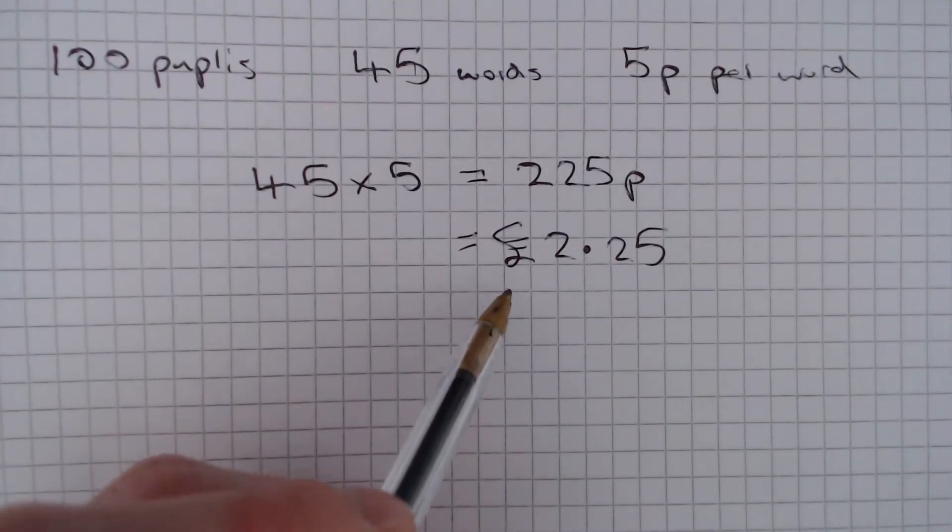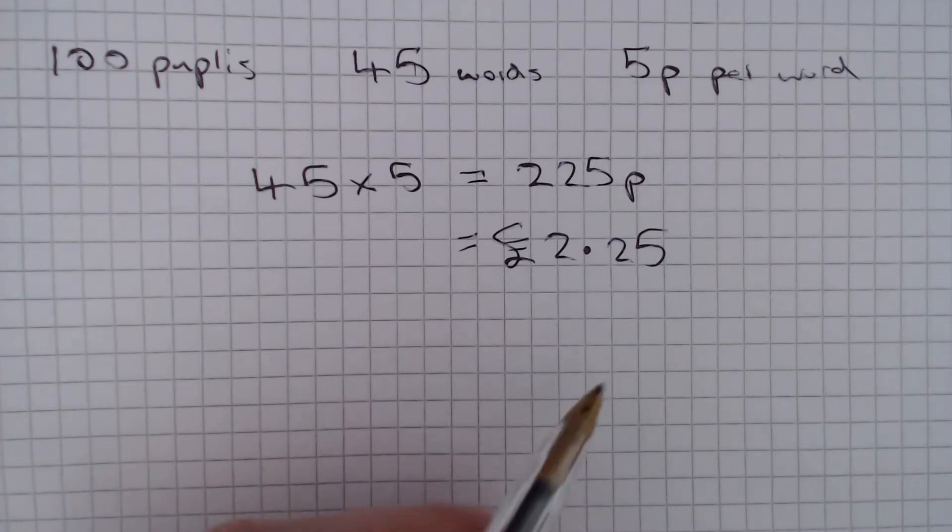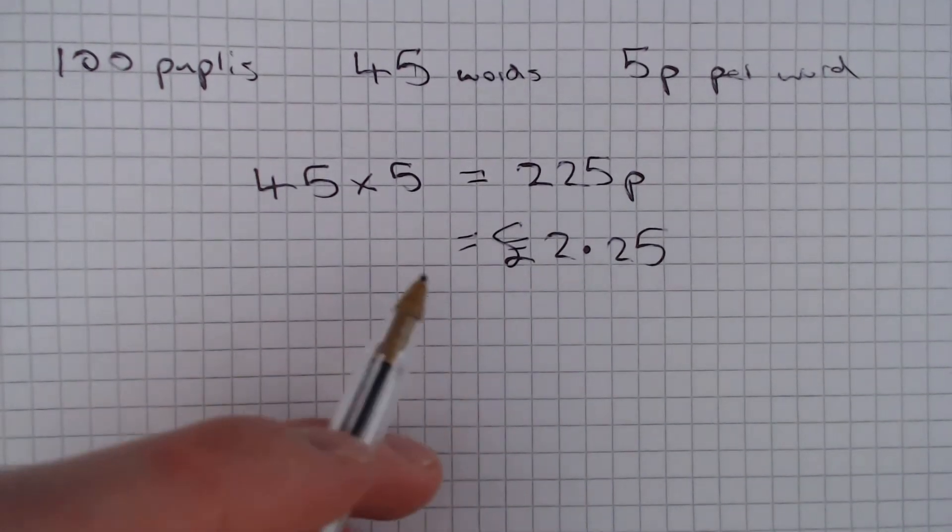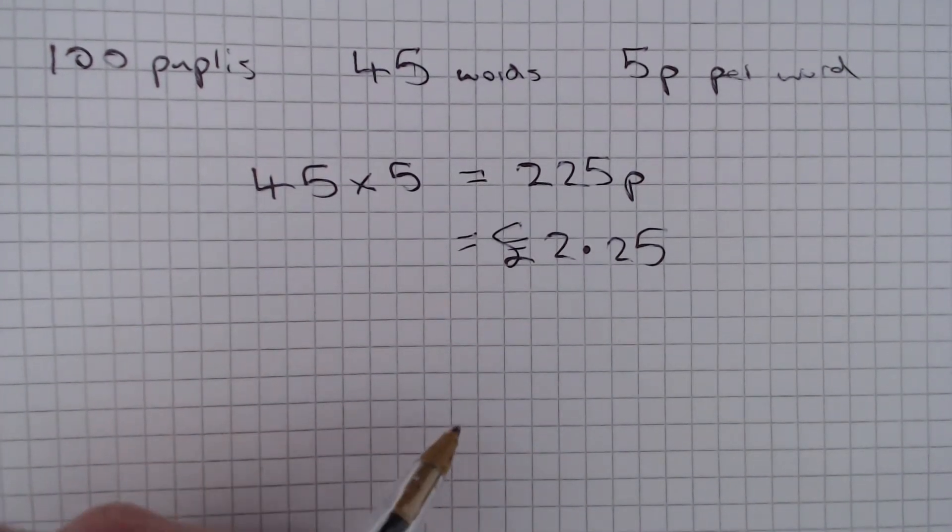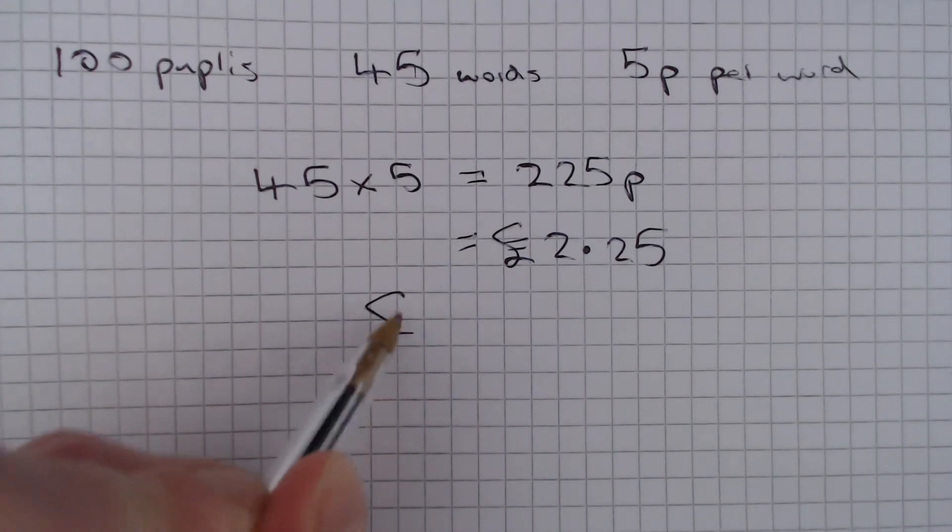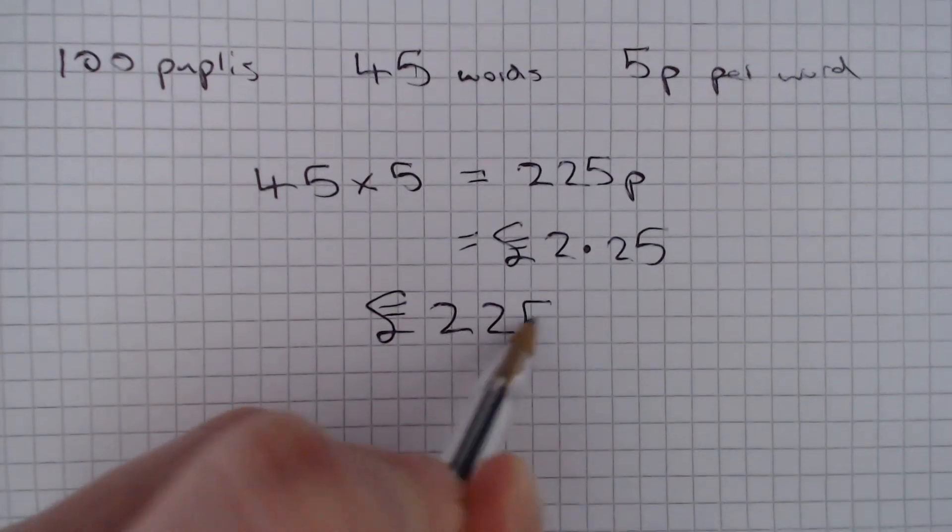In pounds that's obviously going to give us £2.25. And now we just need to multiply this by 100 as there are 100 pupils. So the answer is £225.